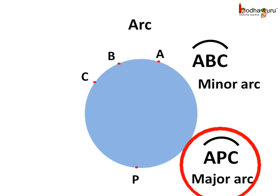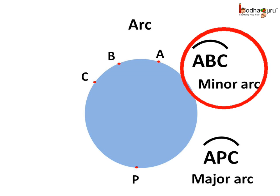If we observe carefully, arc ABC is bigger arc and it is called the major arc. And arc ABC is the smaller arc and it is called the minor arc.